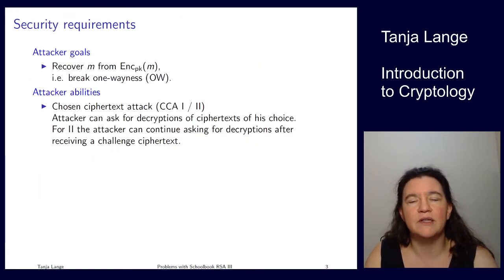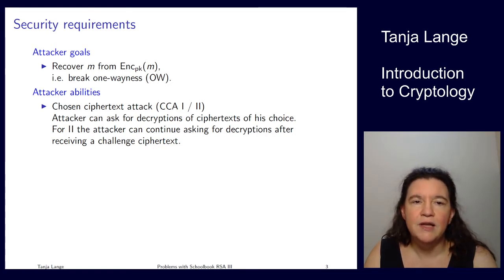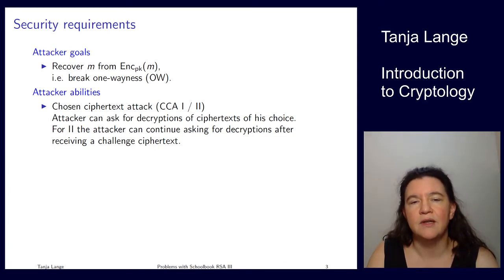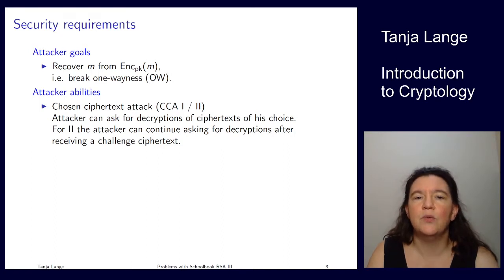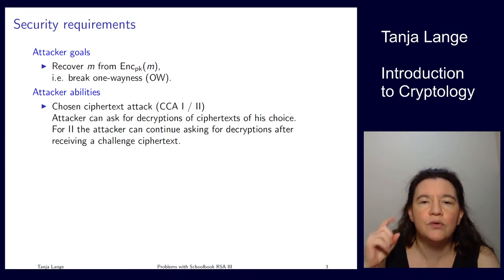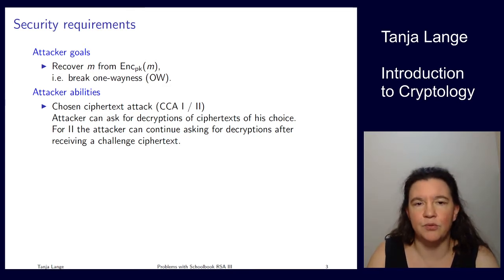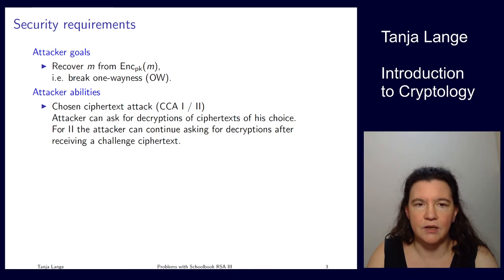Now why is it a problem? Let's look again at the security requirements. At this point, you should have already watched the security notions for public key video, where I explained different attacker goals and different attacker abilities. So here we're going to look at the one-wayness — the impossibility of recovering the message from the ciphertext — with the ability that the attacker can query for decryptions. In particular, we like the CCA2 version of it, where we can query at any moment after getting the challenge, and we want to be able to still ask for decryptions on any ciphertext. But of course we're not allowed to ask for the decryption of the challenge ciphertext itself.